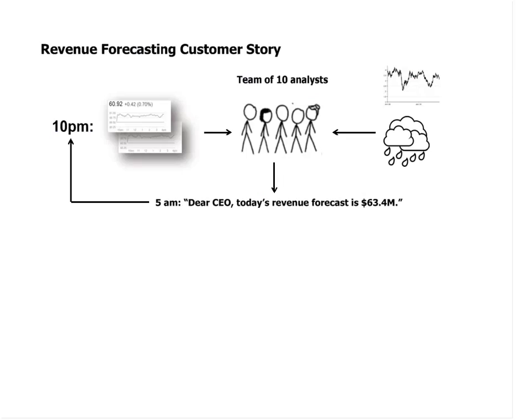This team works overnight gathering data — looking at all the data sent to them, but also putting together data from the financial markets, weather reports, maybe major sports events, and so on. They put all of this together into a model, and at 5 a.m. they send an email to the CEO and all the C-level executives with the day's forecast — let's say 63 million. This is pretty sophisticated; most companies don't even do this today, and the forecast they produce is very accurate.